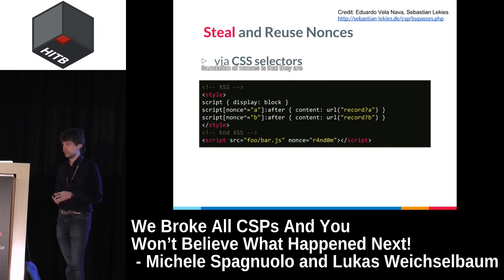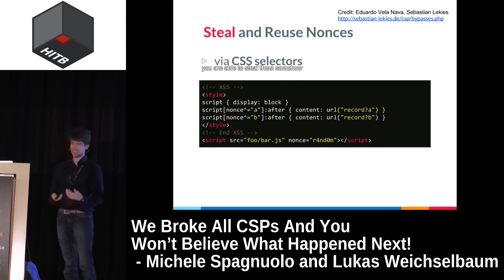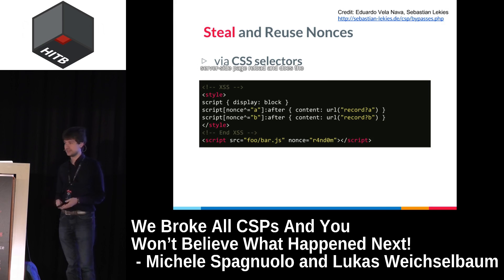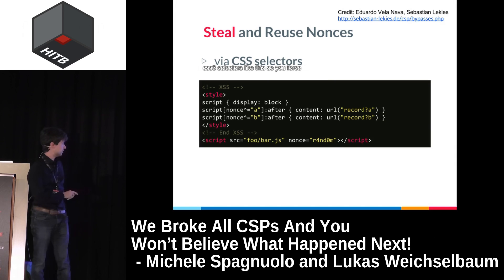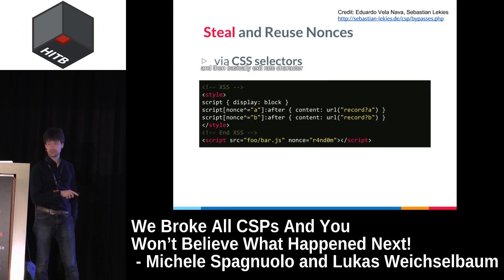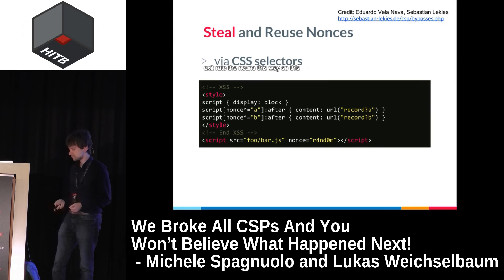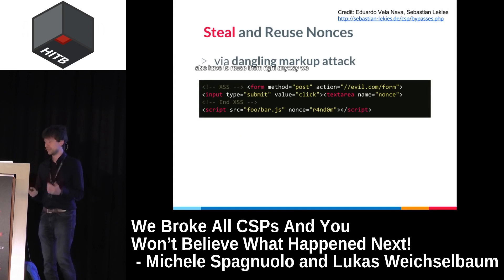The next category is stealing and reusing nonces. The whole foundation of nonces is that they are one-time and unique per page load, making them hard to reuse even if exfiltrated. You can exfiltrate nonces using CSS3 selectors: using the begins-with operator, you select scripts with a nonce attribute starting with 'a', override the content to load a URL containing 'a', and exfiltrate character by character. There's also exfiltration via dangling markup attacks — not new, but known for years. You inject a form, input, and textarea; the textarea is a CDATA-like tag where everything inside is unparsed, so you can capture the script tag content as text and post it to evil.com.